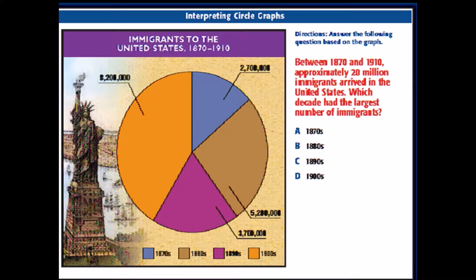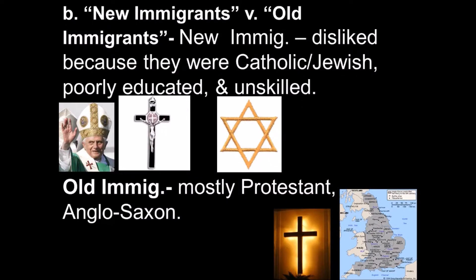The 1900s had the largest surge of immigrants. New immigrants were disliked predominantly because of the culture they brought in. They were predominantly Catholic and Jewish, and very poor — one of the push factors was starvation back home. They weren't well educated and were often unskilled. Old immigrants were mostly Protestant Anglo-Saxons — Irish and English — who spoke English, so there wasn't a language conflict. With the new influx came a lot of Catholics and Jews, and it caused a great deal of conflict.